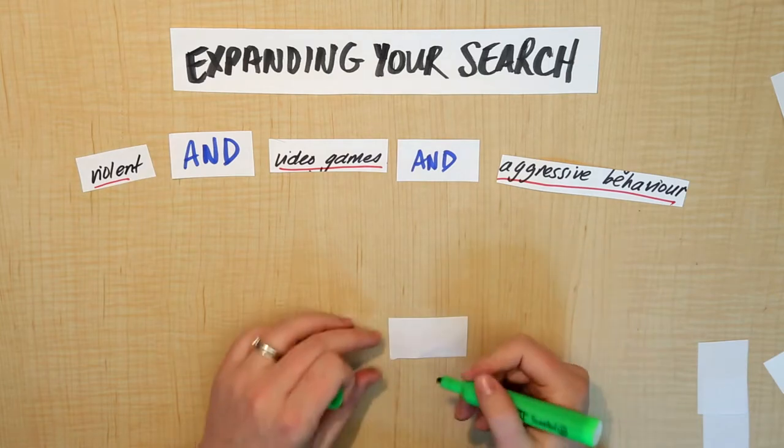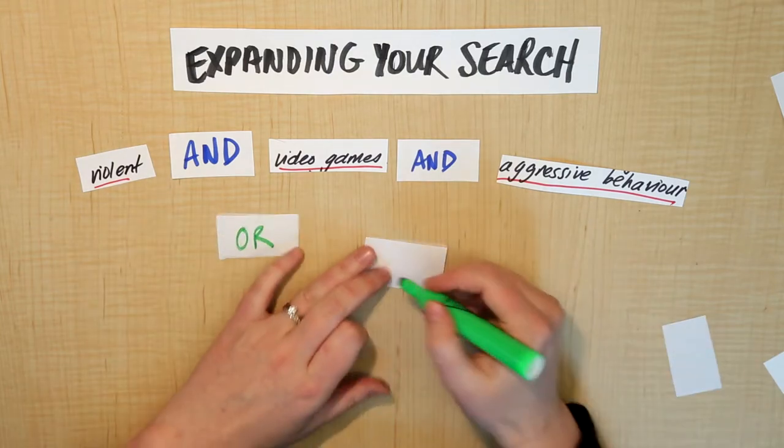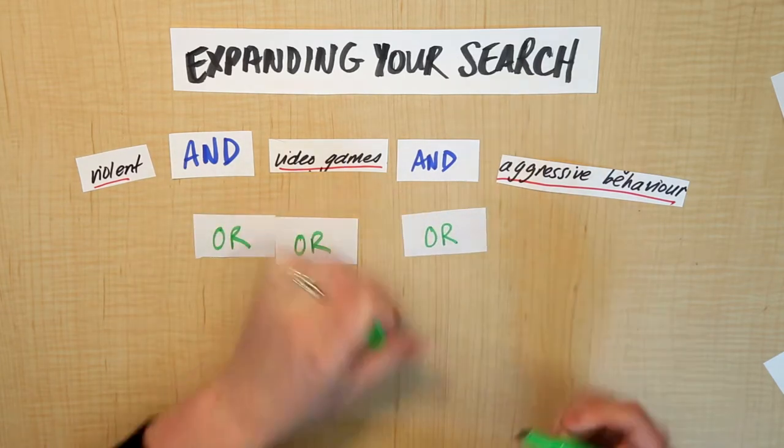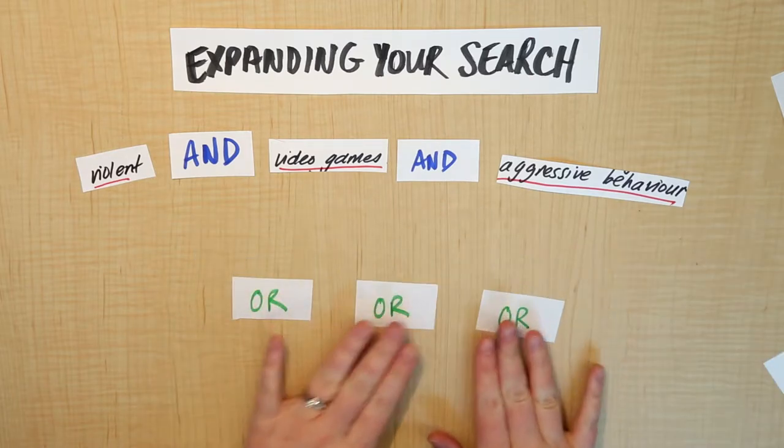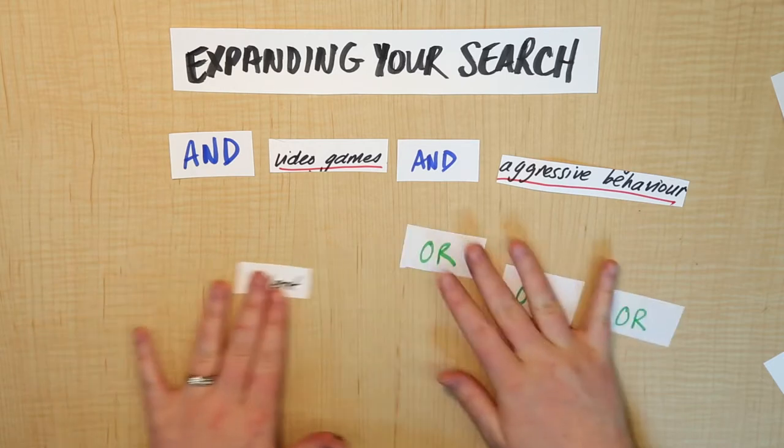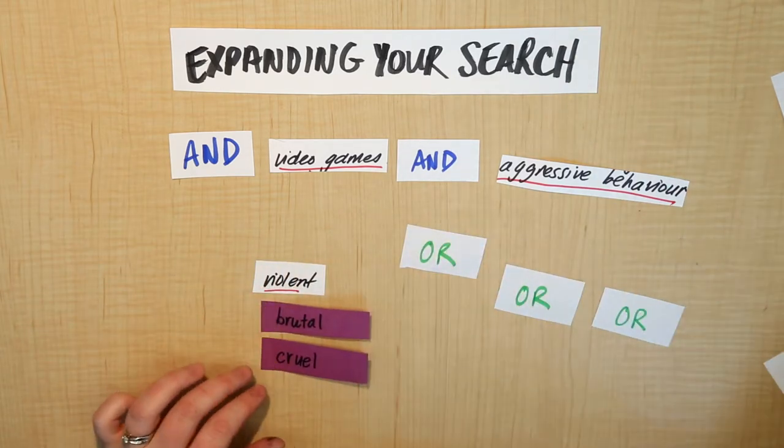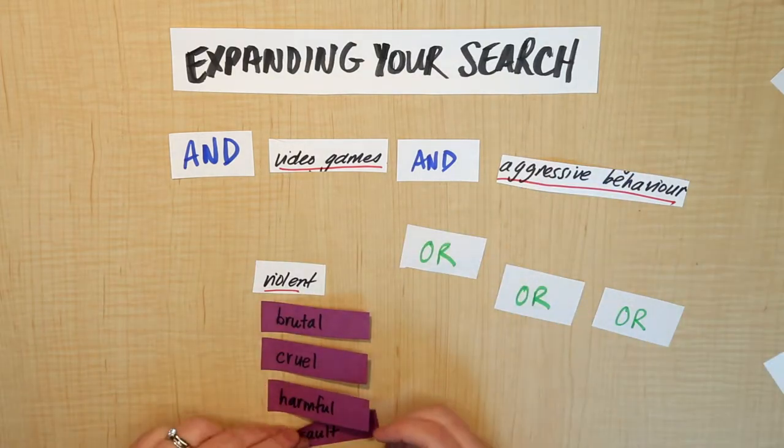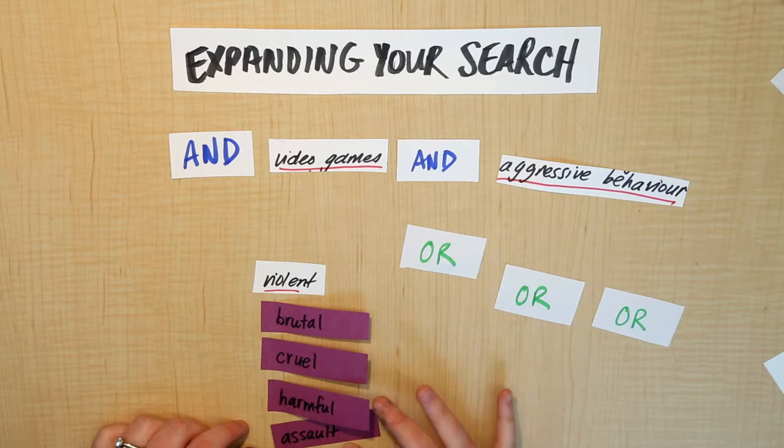Pairing with the word AND is the word OR. The word OR is where we can use all of those different options that we gave ourselves in the last step. So remember how we said that some synonyms for violent could be brutal or cruel, harmful, assault, and crime? What we have the option to do is use the word OR to tell the system that we're happy with any of these words coming back.